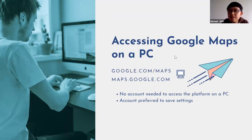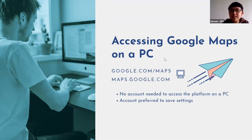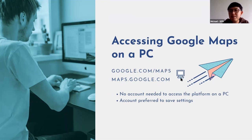To access Google Maps on a PC, go to your favorite browser — Chrome, Firefox, or any other browser you like. Go to the address bar and type in google.com/maps or maps.google.com. These are the easiest ways to get to the platform from your browser.